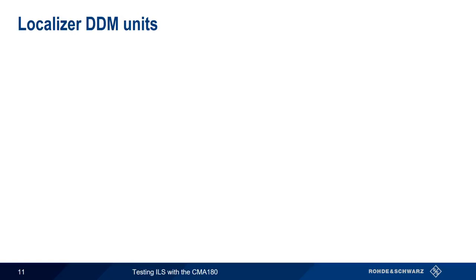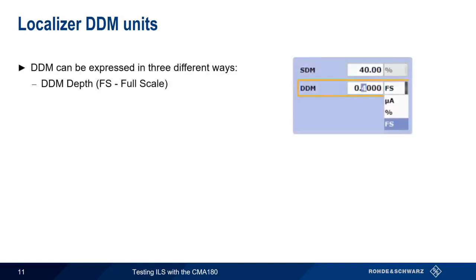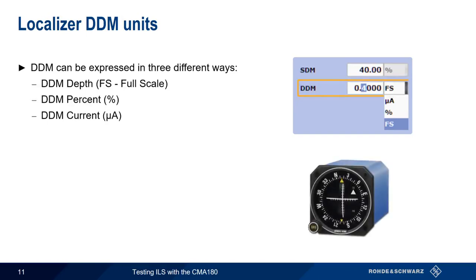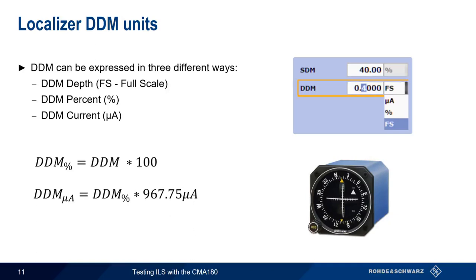Difference in depth of modulation can be expressed in three different ways: DDM depth, DDM percent, and DDM current. DDM current refers to the amount of current supplied to the localizer gauge or dial, and the amount of right-left needle deflection is a function of this current. The conversion between units is done using simple formulas. The value 967.75 microamps corresponds to 150 microamps at a DDM of 15.5%, which is normally seen at the outer extremity of the ILS course sector.